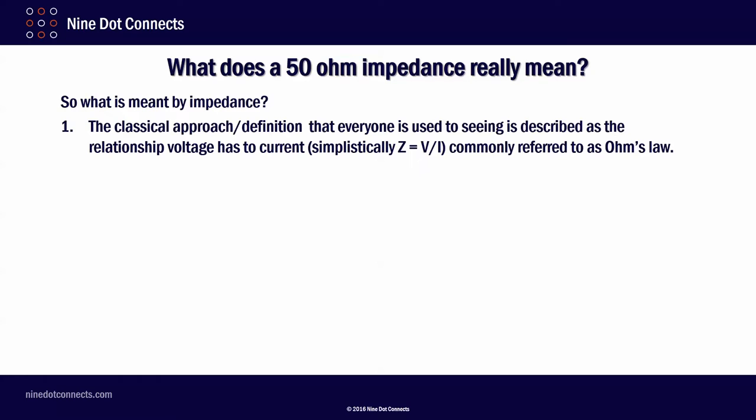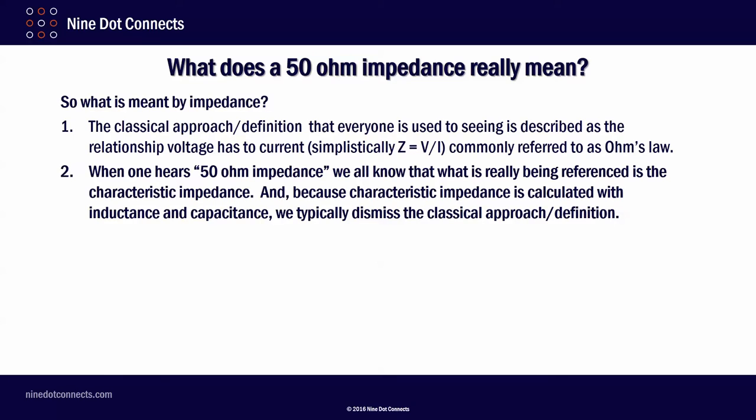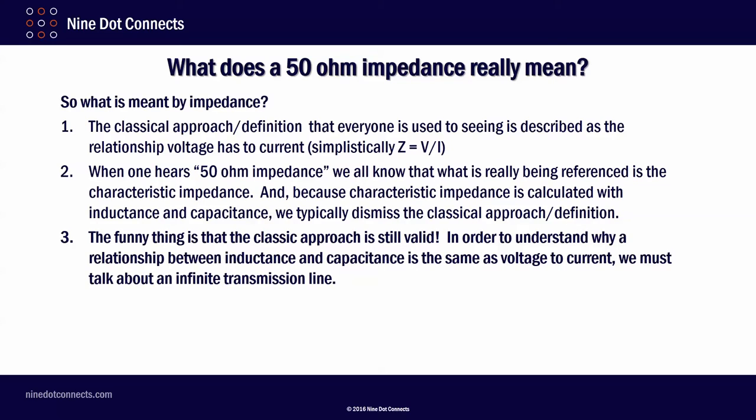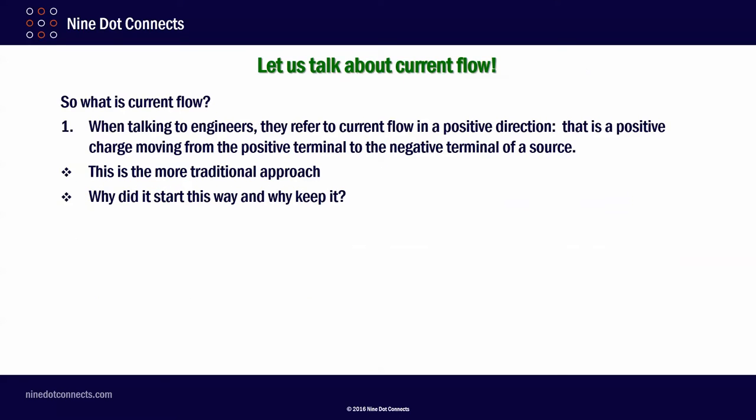So, what is meant by impedance? The classical approach that everyone is used to seeing is described as a relationship voltage has to current. Simplistically, Z equals V divided by I, commonly referred to as Ohm's law. When one hears 50 ohm impedance, we all know that what really is being referenced is the characteristic impedance. And because characteristic impedance is calculated with inductance and capacitance, we typically dismiss the classical approach or definition. The funny thing is that the classic approach is still valid. In order to understand why the relationship between inductance and capacitance is the same as voltage to current, we must talk about an infinite transmission line. In that discussion, time is of the essence.